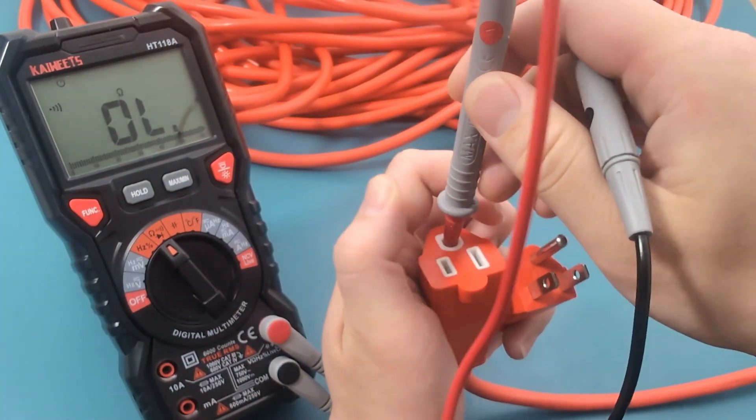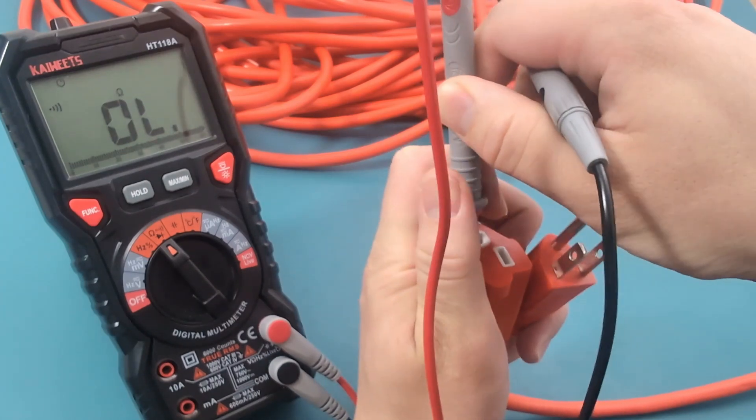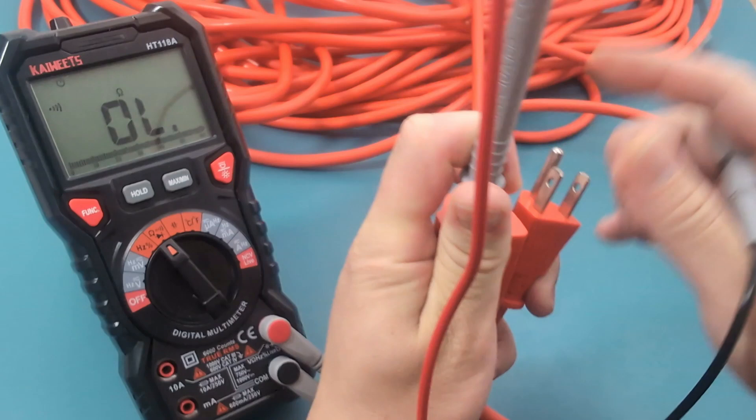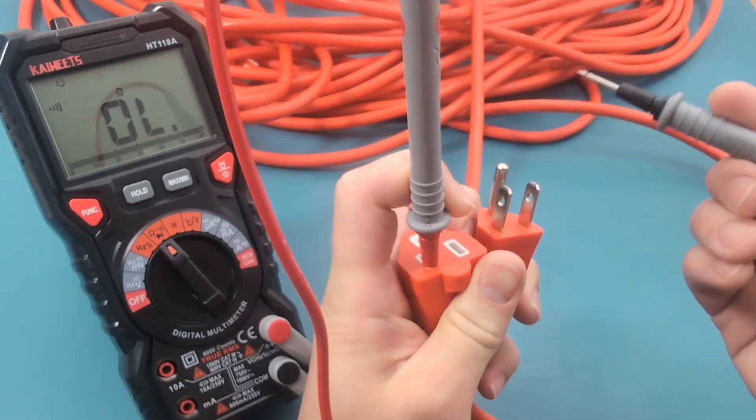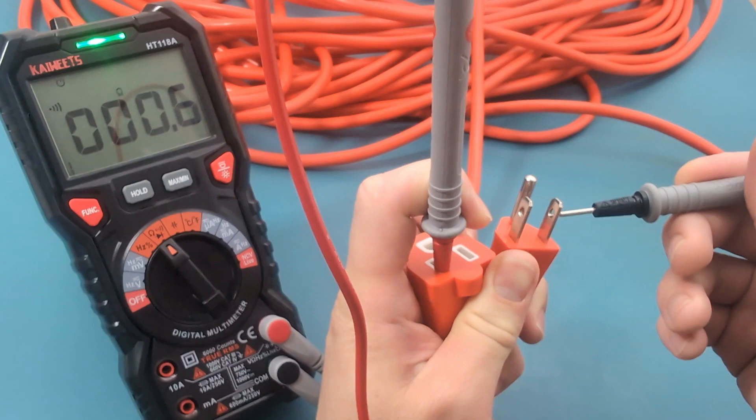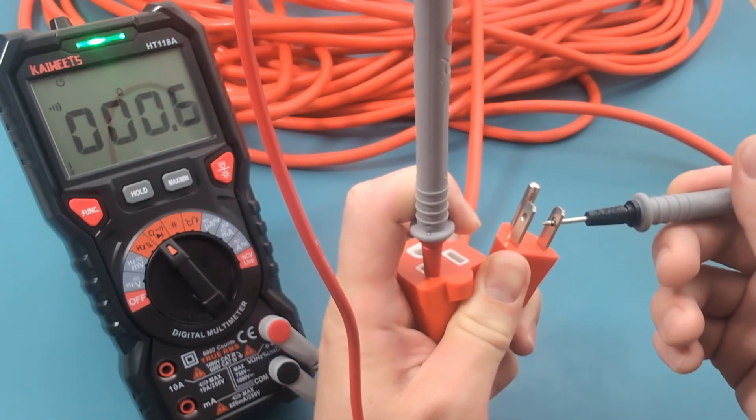Let's repeat this process for the hot side of the plug. The hot terminal has the smaller slot. Insert one of the probes into the hot side of the female plug. Touch the other probe to the hot side of the male plug. We have continuity and the resistance value is around 0.6 ohms.